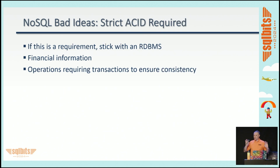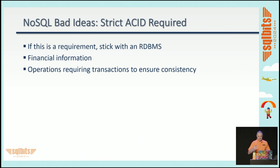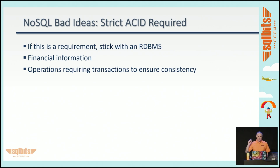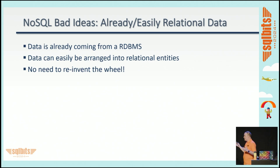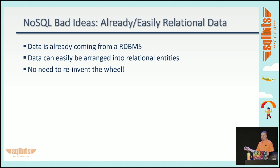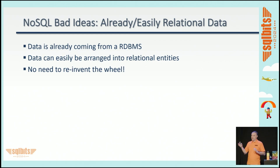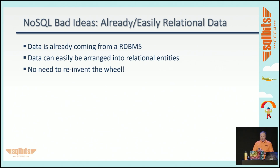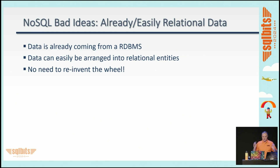NoSQL bad ideas: anything where strict ACID is required. If you really need strict transactional guarantees — like financial information — stick with a relational database system. Another NoSQL bad idea is data that's already relational. Why reinvent the wheel converting data from one form to another? I worked at a place where we spent lots of time taking non-relational data and making it relational for no good reason — when we stopped, a whole lot of goodness came out of that. If your data can easily be arranged into relational entities, store it in a relational database. No need to create more work.